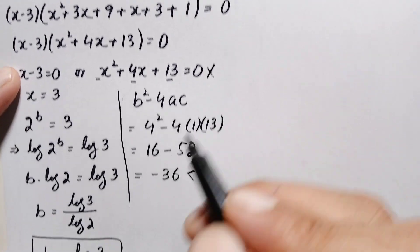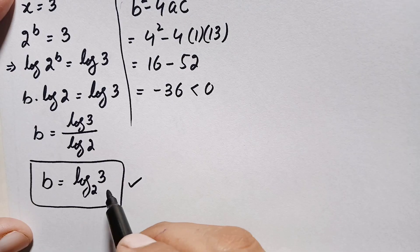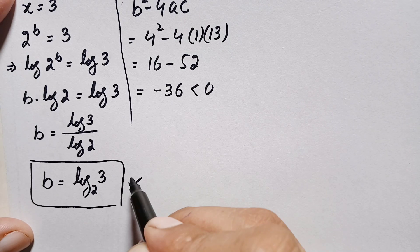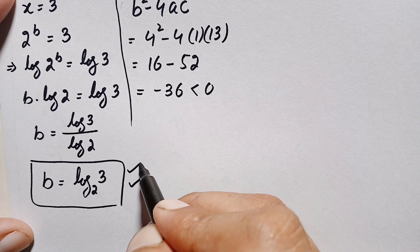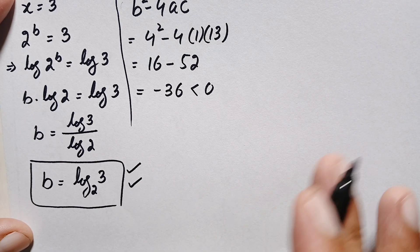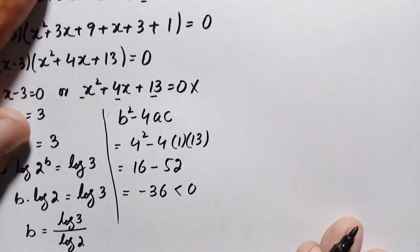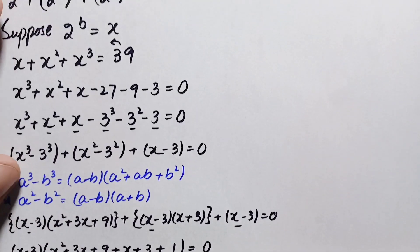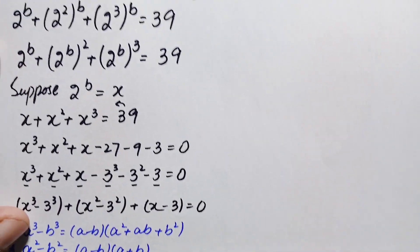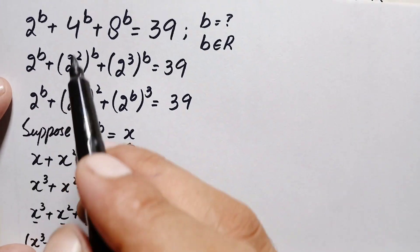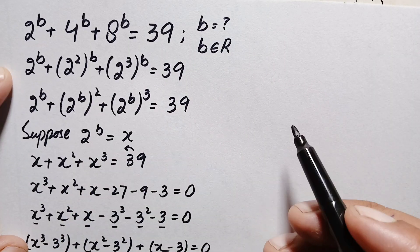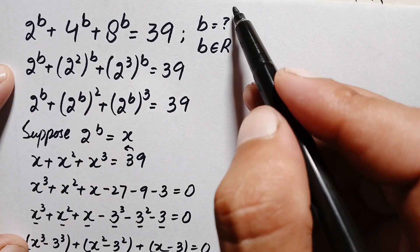Therefore, we have only one real value: b equals log base 2 of 3. We will now verify that this is the exact and correct value of b in this problem.